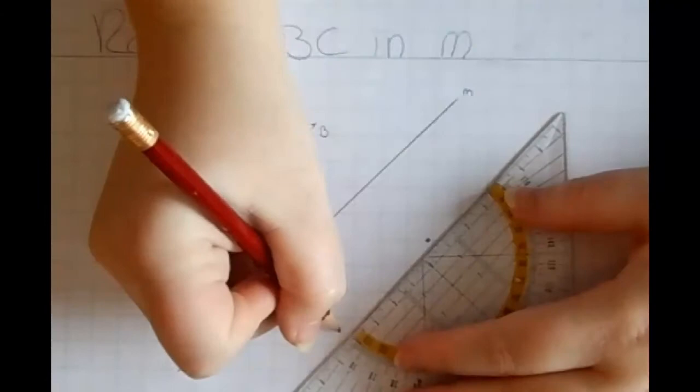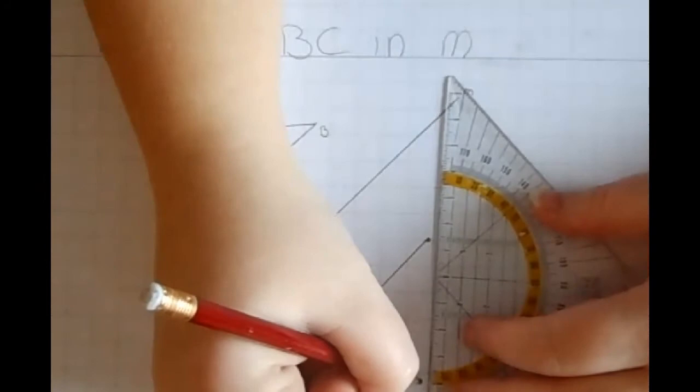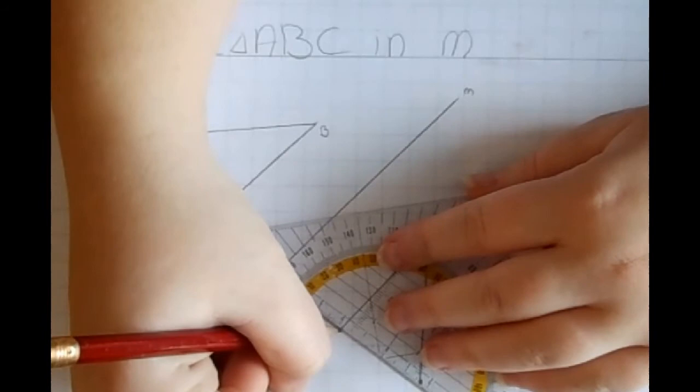Now we have our three vertexes and all we need to do now is connect the dots so we get the mirror image of the triangle.